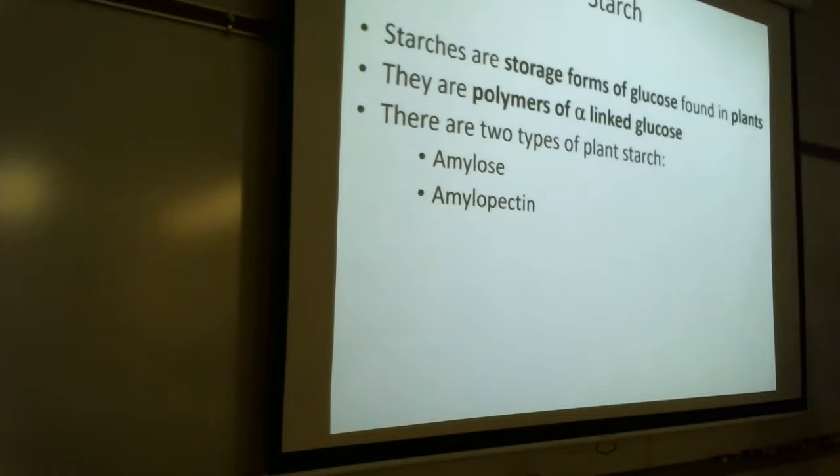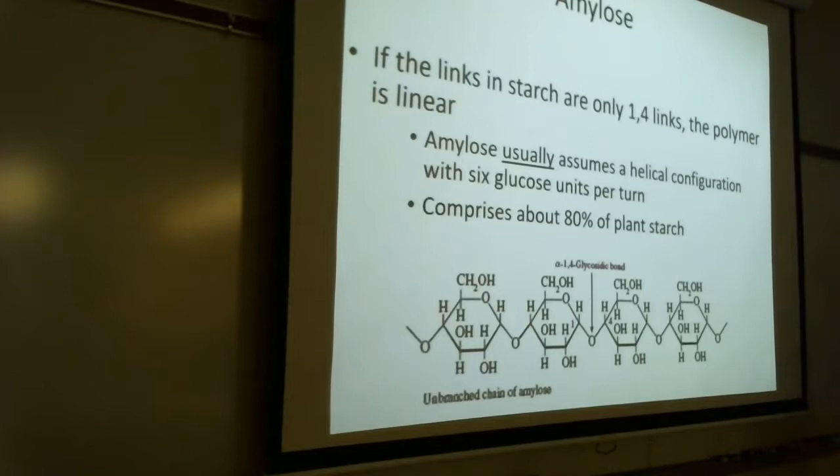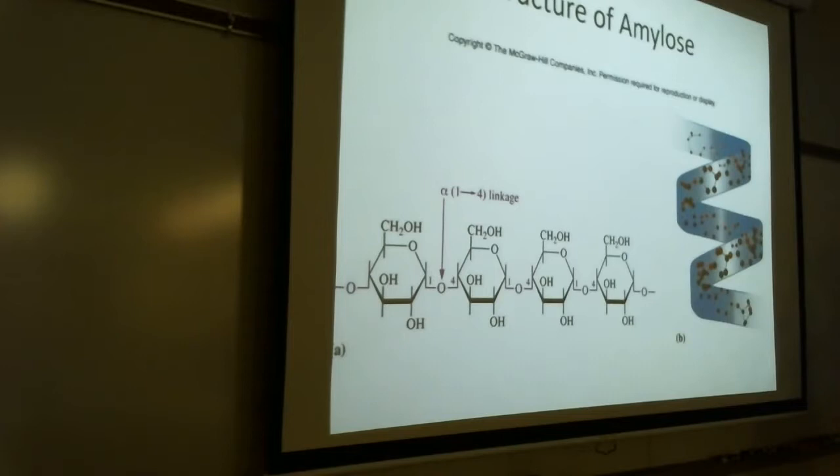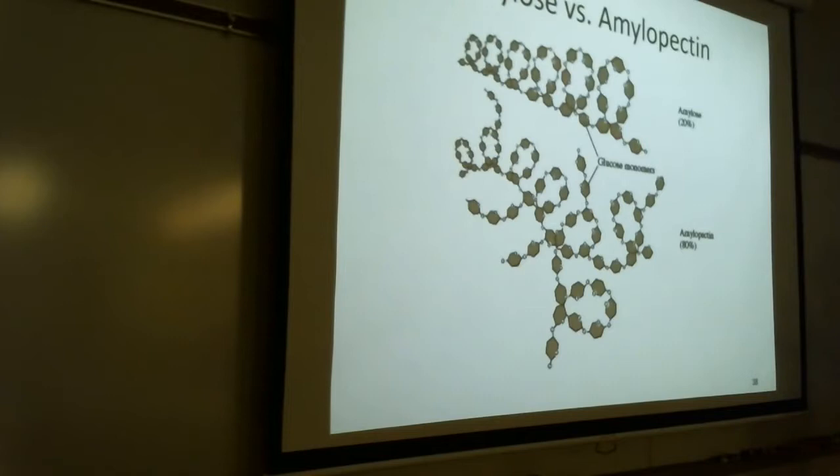So starches are glucose polymers, and there are two types, amylose and amylopectin. I'm not going to make you draw it, just so you know. There's amylose. It's got this kind of helical shape. And then there's amylopectin. There's amylose versus amylopectin. I'm not going to make you draw it. I'm not going to make you memorize which one's which, just so you have an idea of what your starches look like. And we'll do some lab tests for starch, but I'm not going to make you draw a starch.